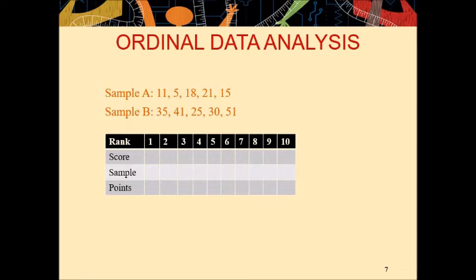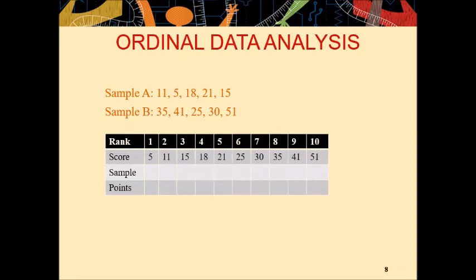Here you can see rank 10 individuals. Next is you have to enter the score. So, you will write the score in ordered form: 5, 11, 15, 18, and so on, under each rank. Now you will write the name of sample each score belongs to. We know that 5 belongs to sample A, 9 belongs to sample B, 11 belongs to sample A, and so on.